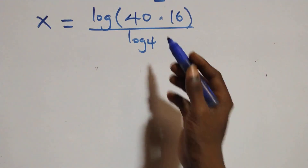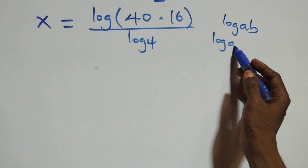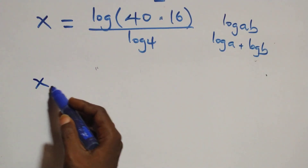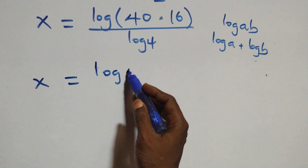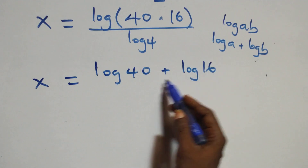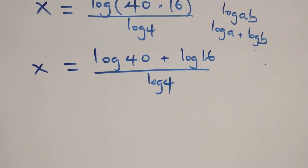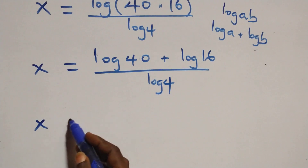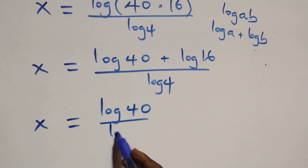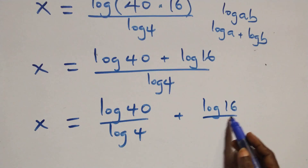This follows the log product rule. When we have log a times b, this is the same thing as log a plus log b. So this becomes x equals to log 40 over log 4 plus log 16 over log 4.